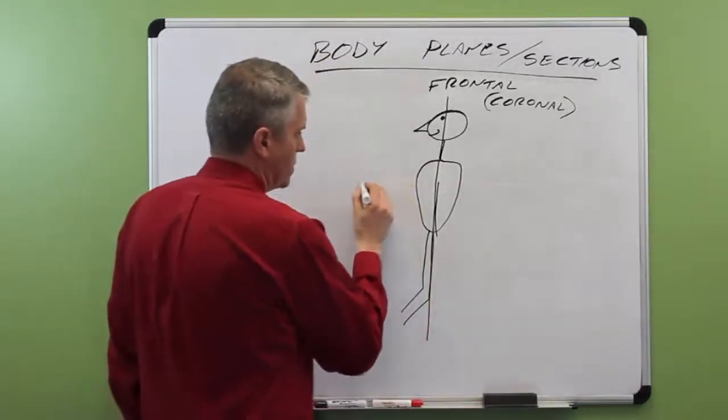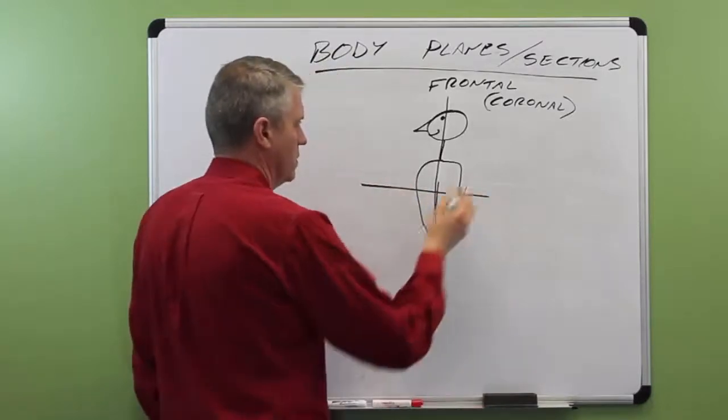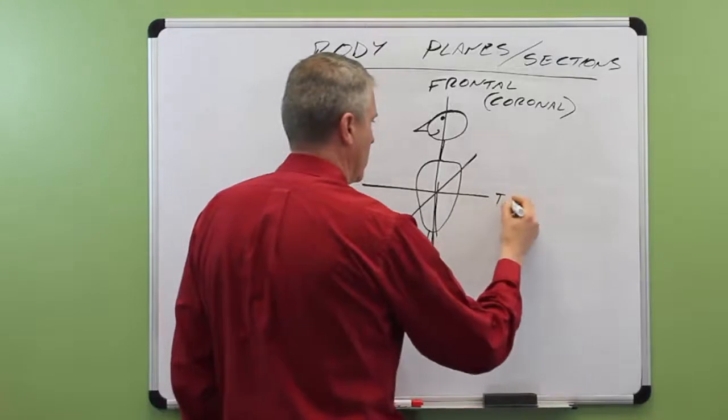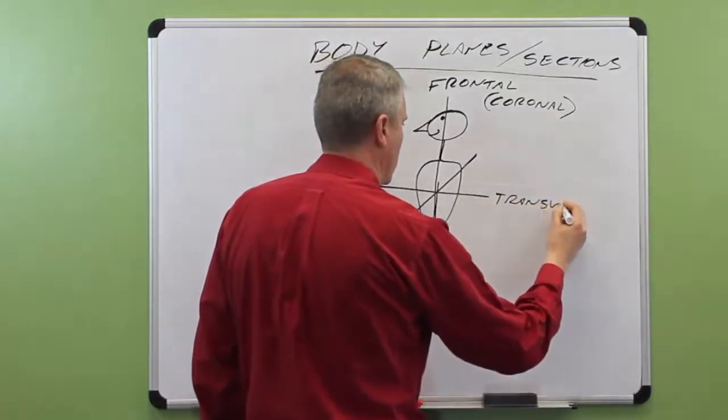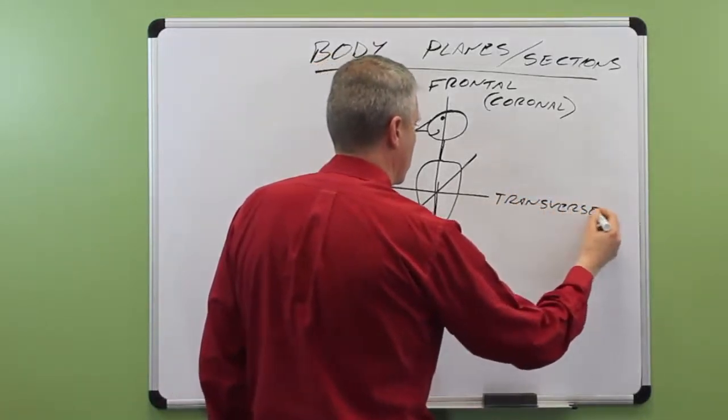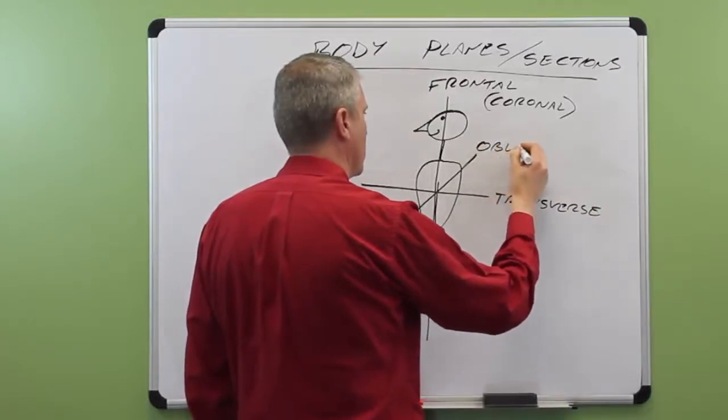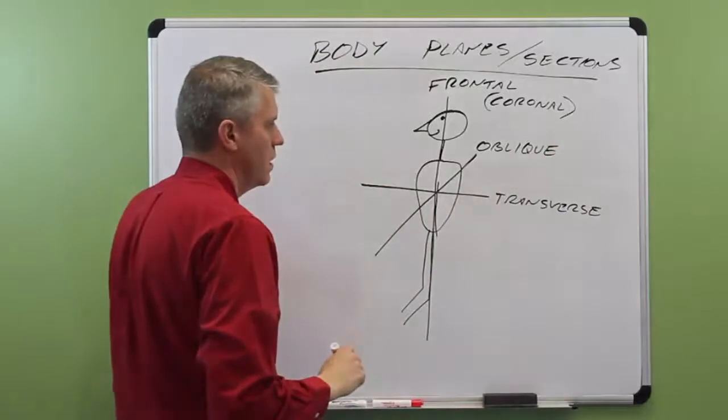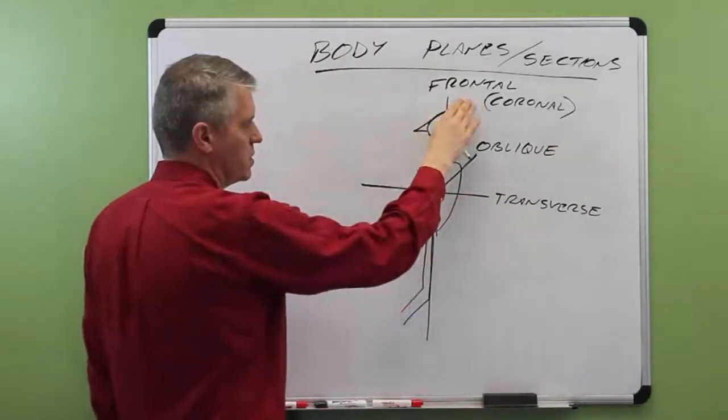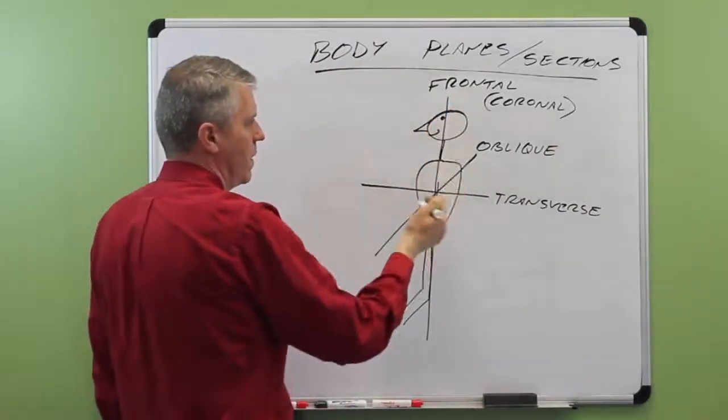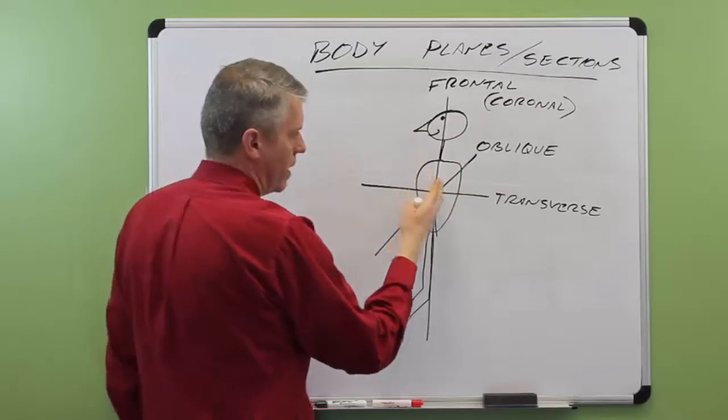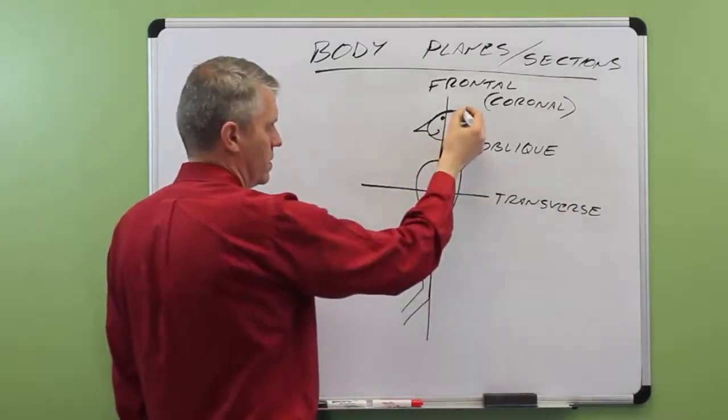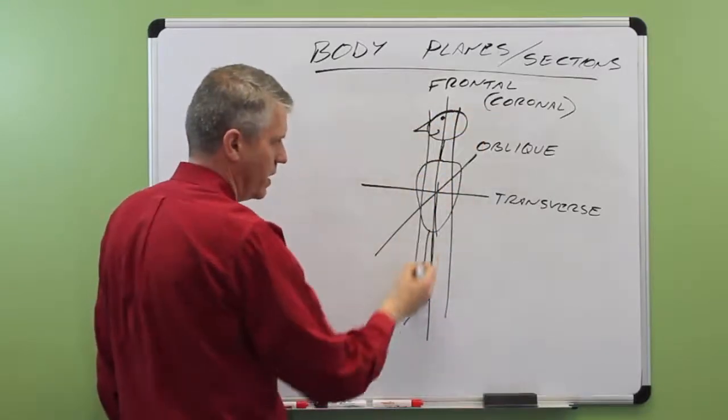And then we could do a transverse section here as well. Or again, we could do an oblique section from the side. Transverse section and oblique. What I didn't mention before, for the frontal or coronal section, notice that it's going to create a back part and a front part. And again, we could say that we could do this kind of frontal or coronal section at any point on the body.